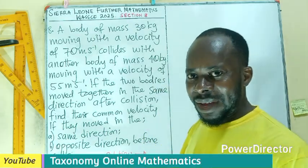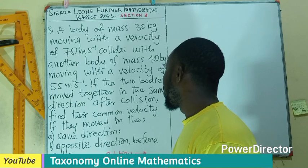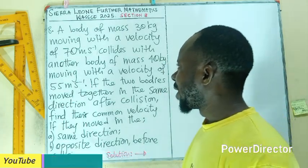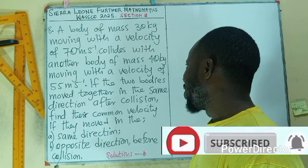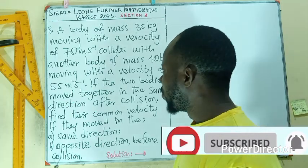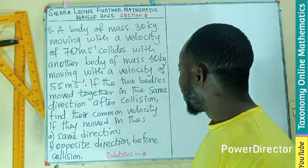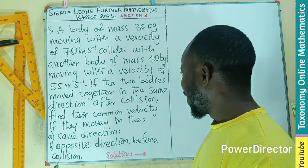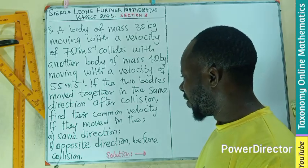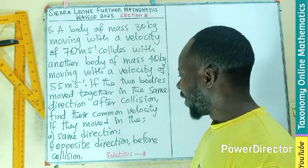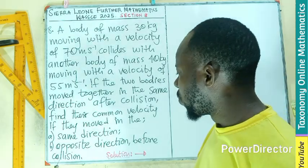Welcome to question number 8. A body of mass 30 kg moving with a velocity of 70 m per second collides with another body of mass 40 kg moving with a velocity of 55 m per second. If the two bodies move together in the same direction after collision, find their common velocity if they move in A. Same direction B. Opposite direction before the collision.